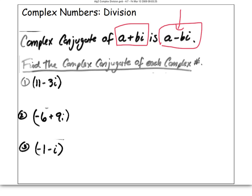So to wrap up learning objective A, we would list the complex conjugates of these numbers. The complex conjugate of 11 minus 3i is 11 plus 3i.